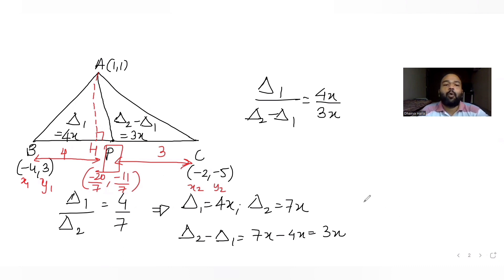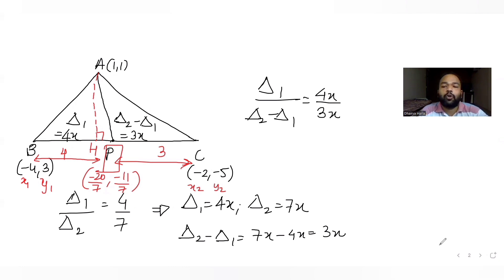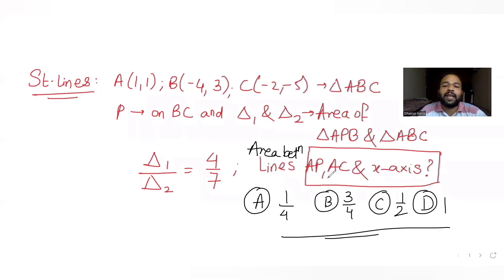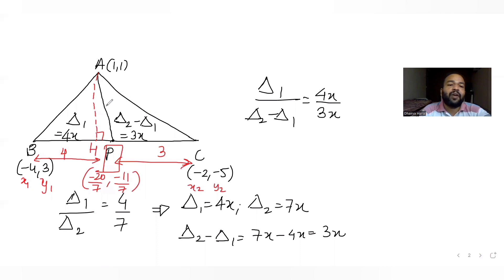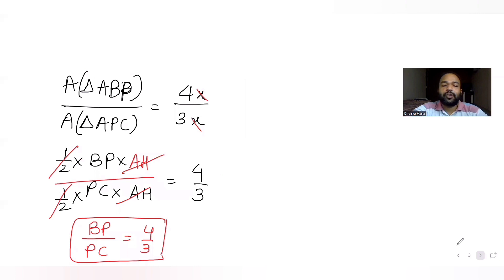Now once we have the coordinates of P, we can find the equations of the lines. We have been told to find the area enclosed by lines AP, AC, and the x-axis. So let's find the equation of line AP and line AC.